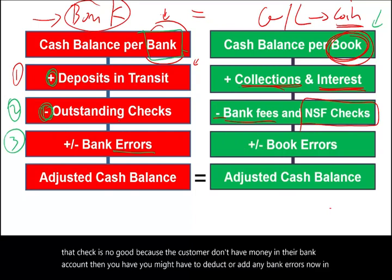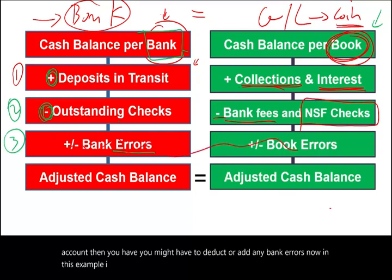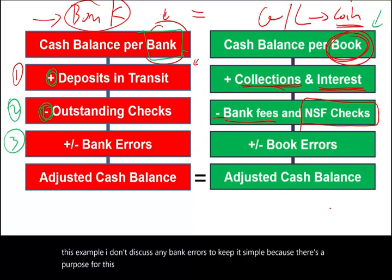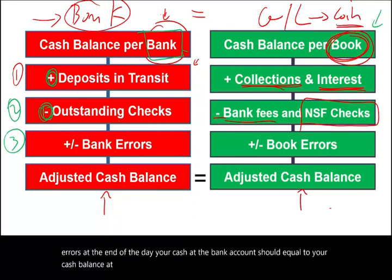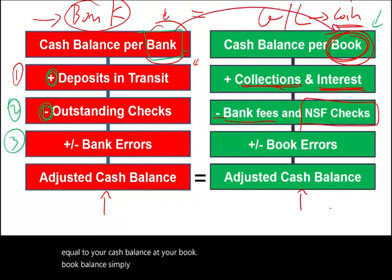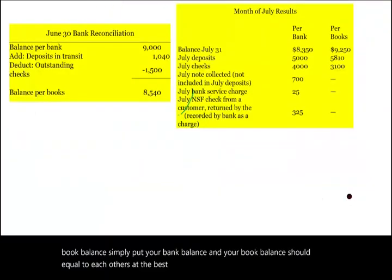In this example, I don't discuss any bank errors to keep it simple, but in other lessons I do have examples with bank errors. At the end of the day, your cash at the bank account should equal to your cash balance at your book balance — your bank balance and your book balance should equal each other. The best way to illustrate this concept is to take a look at an example.